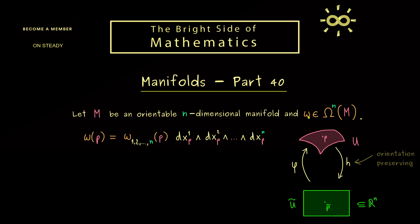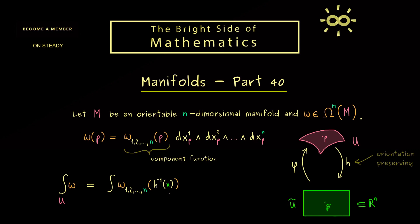This is the local description of the volume form in the chart u. The important part is the differentiable component function, because exactly this one we can use for defining the integral of omega. We combine it with the parameterization phi and get a differentiable function defined on R^n. More precisely, we put the inverse of the chart into the component function. The variable x lives in u tilde, giving us an ordinary n-dimensional integral in R^n over the domain u tilde, which is the image of u under h.